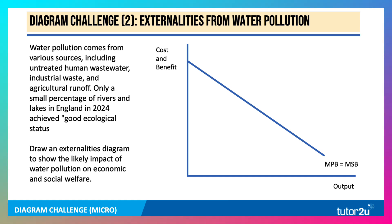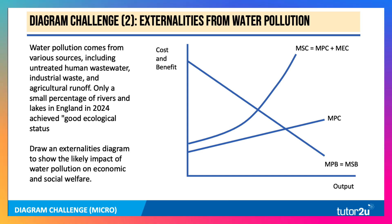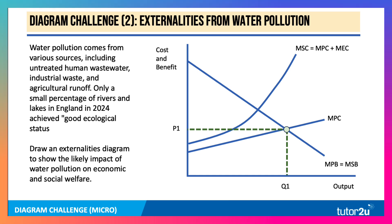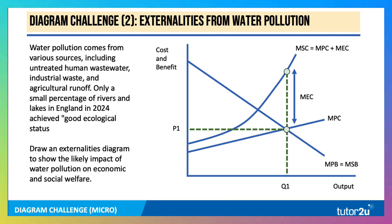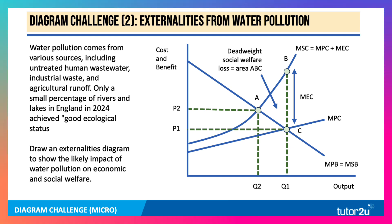We assume no externalities from consumption, so private benefit equals social benefit. There is a marginal private cost of supply, but with non-linear externalities — as scale of output and water pollution increases, external cost rises. So marginal social cost equals marginal private cost plus marginal external cost. The private equilibrium is at price P1, output Q1, but at that output there is a significant marginal external cost the market ignores. The social optimum is lower at price P2, output Q2, resulting in a deadweight welfare loss of area A, B, C. That's the diagram for negative externalities from production.